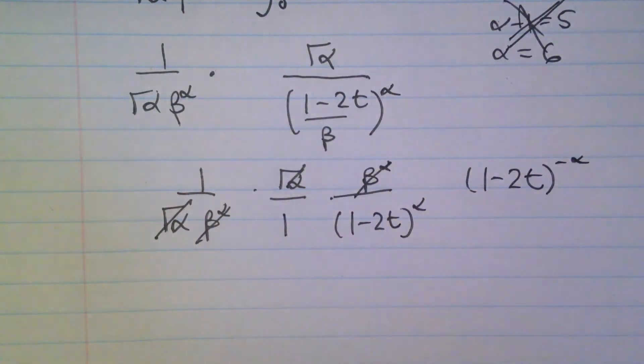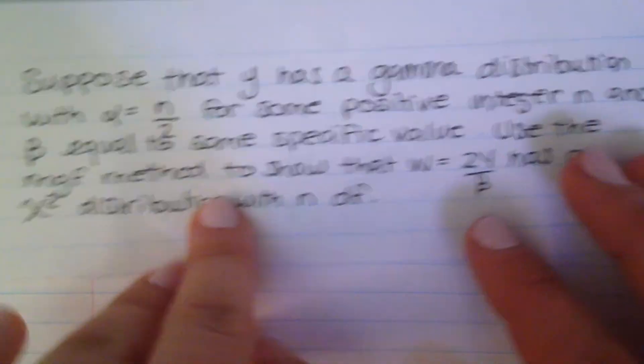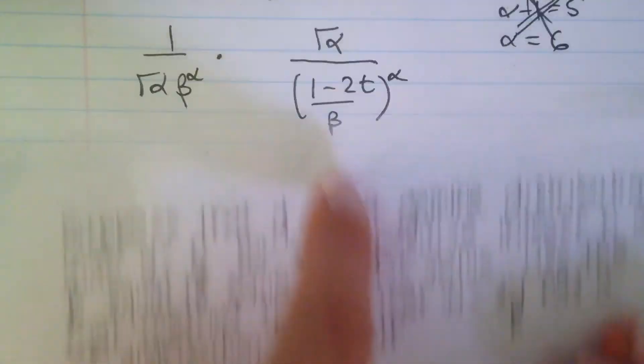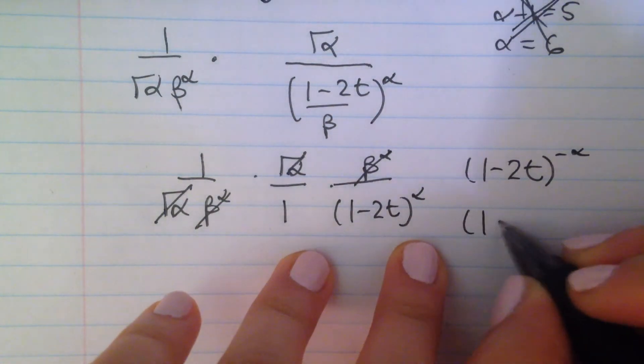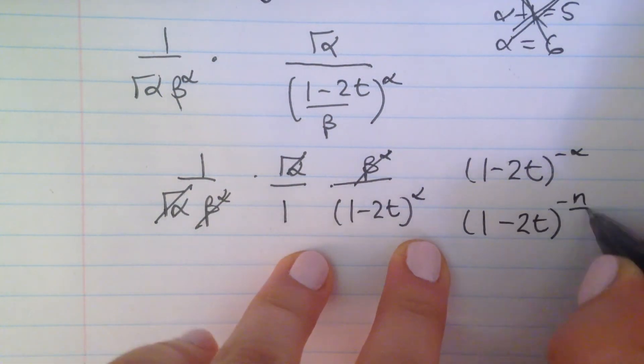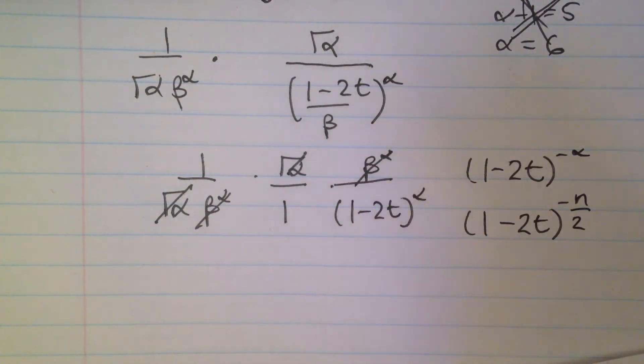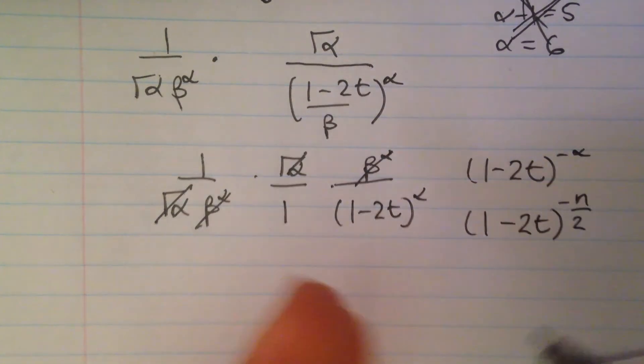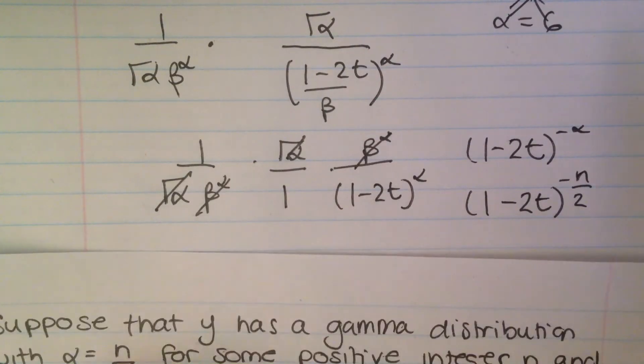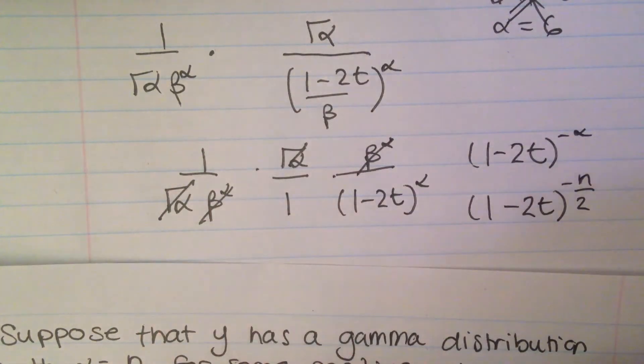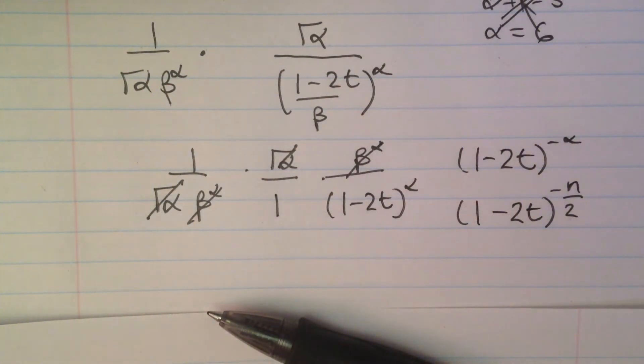So basically that gives us 1 minus 2t to the power of minus alpha. And what do we define our alpha in the question? We said with alpha equals n over 2. And then if we do 1 minus 2t to the power of minus n over 2, we can clearly see that this is the moment generating function of a chi-squared distribution with n degrees of freedom. And what I would really suggest is to know all of your moment generating functions by heart. In that case, when you're solving questions like this, when you're in the middle of the integral, you'll know that you're on the right track. And at the end of the question, you can kind of verify that you have the right moment generating function according to everything you know by heart.